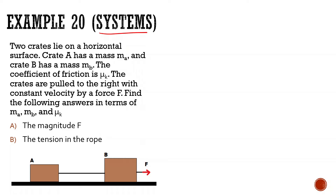Two crates lie on a horizontal surface. Crate A has mass MA and crate B has mass MB, so they have different masses. The coefficient of friction is μk. The crates are being pulled to the right with constant velocity by force F.